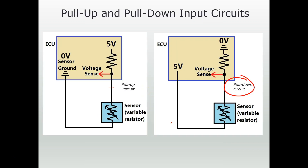Another way to tell is to connect a scan tool to the vehicle and look for the PID that gives you the voltage of this sensor, then go disconnect the sensor. As you unplug the sensor, a pull-up circuit will default to 5 volts, and a pull-down circuit will default to 0 volts. That's another way to find out.